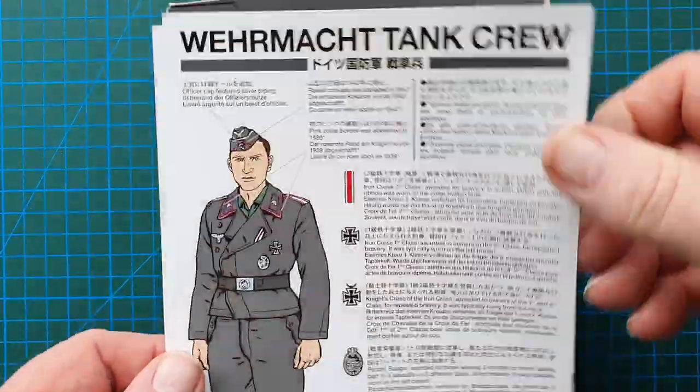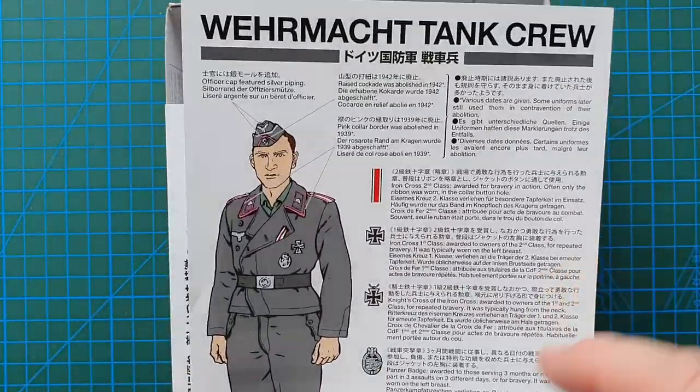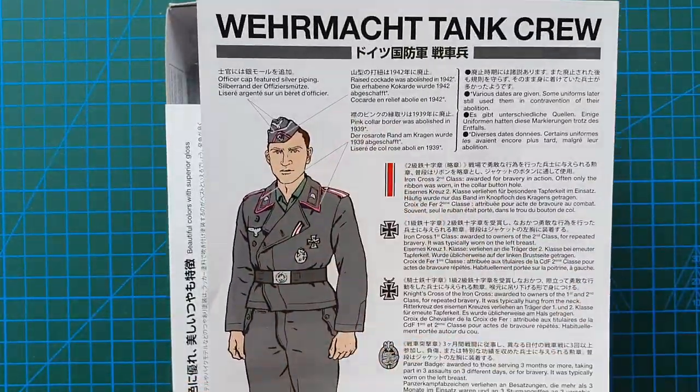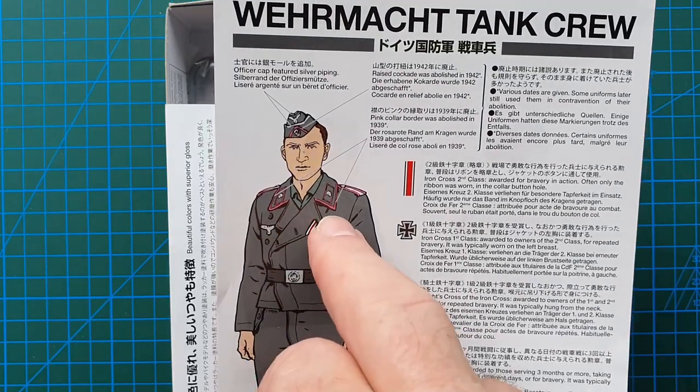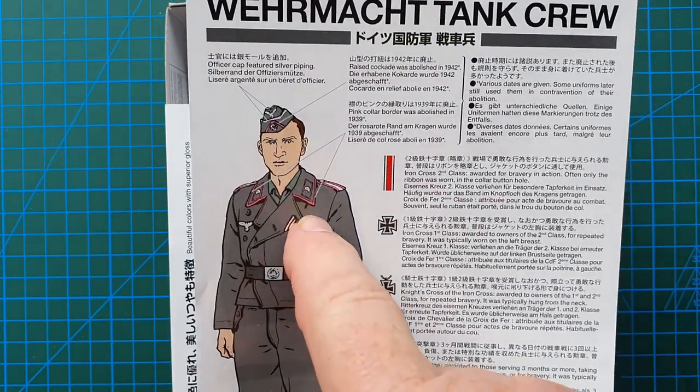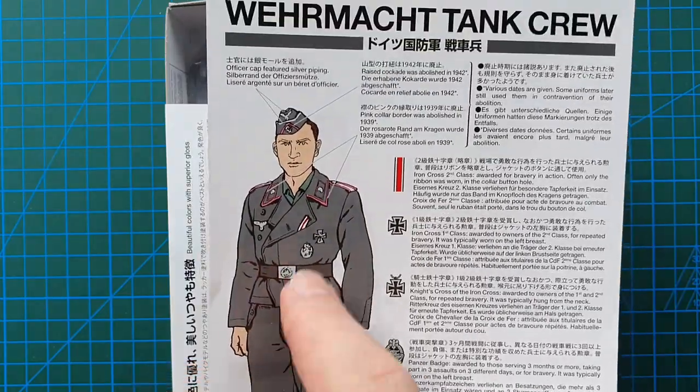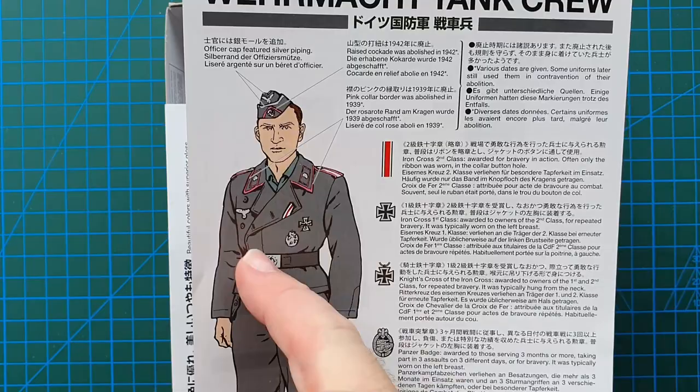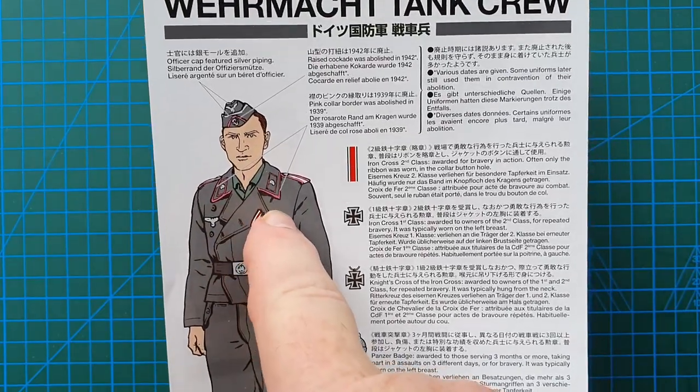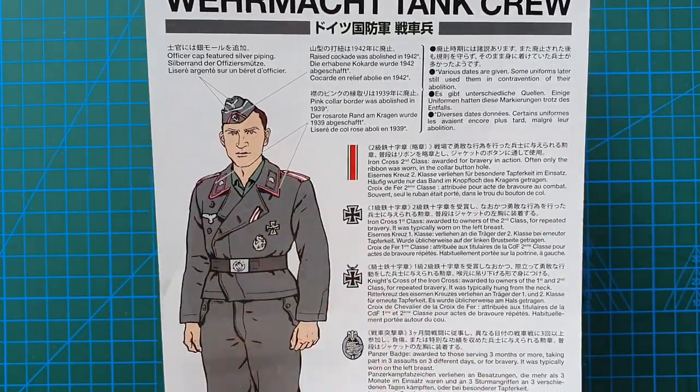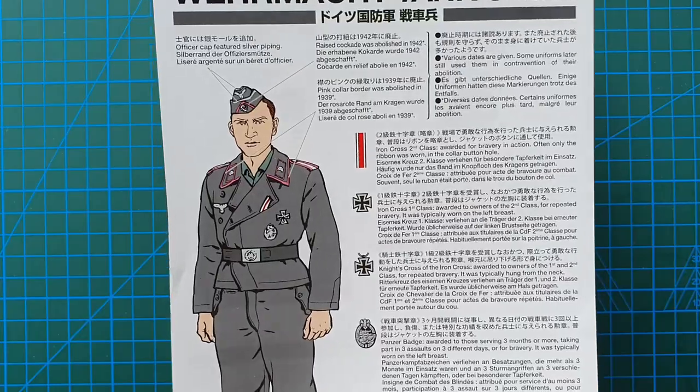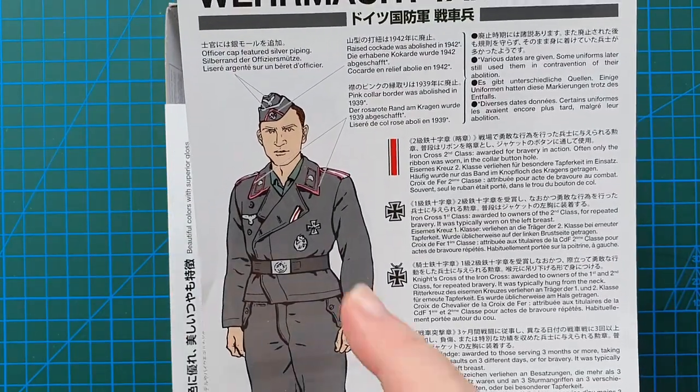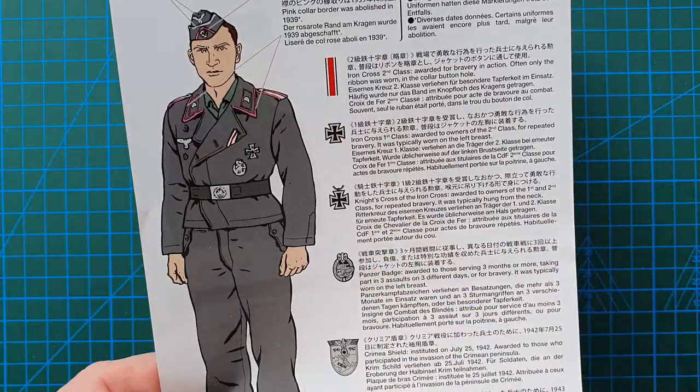This is even better—this is a color guide, basically detailing your piping. Pink for Panzer troops. Early pattern jacket had the piping around the collar edge that was later dispensed with—I think early in the war they got rid of that.